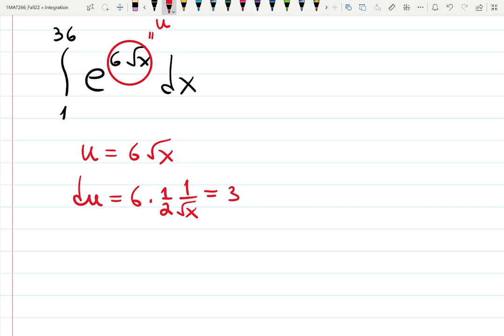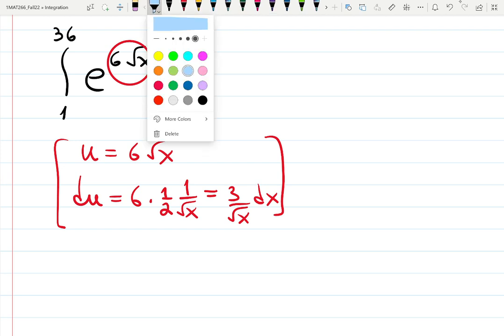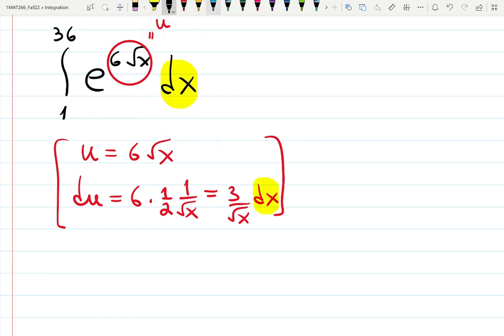You can simplify this to 3 over square root of x dx. Now you need—this is very interesting—check this out. You need dx, so let's solve for dx from the third line. dx will be du multiplied by square root of x divided by 3.